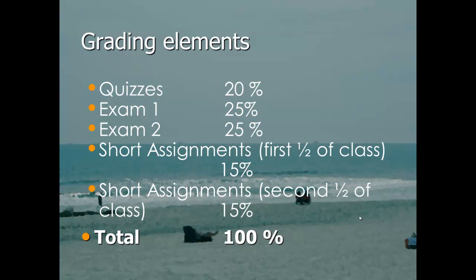The grading elements are simple. We have quizzes, two exams, and short assignments split into two halves of the semester. Quizzes are worth 20%, each exam is worth 25%, and the short assignments from the first half of the semester are 15% with the second half also at 15%.